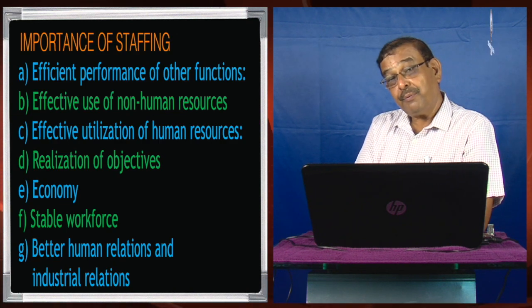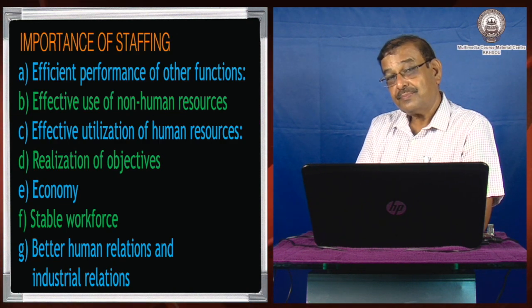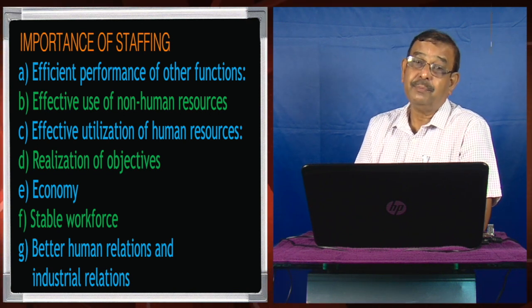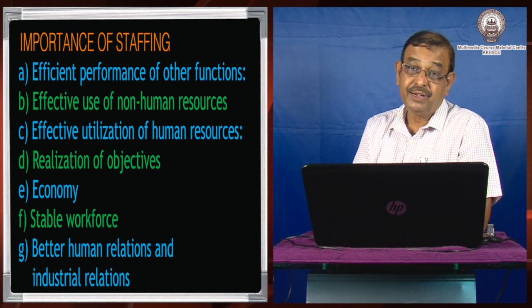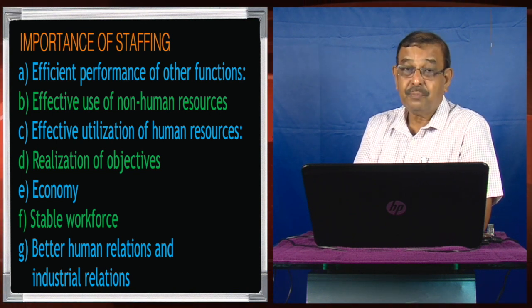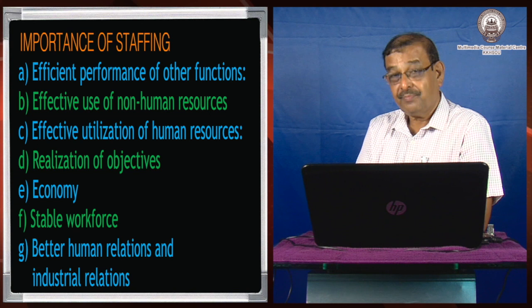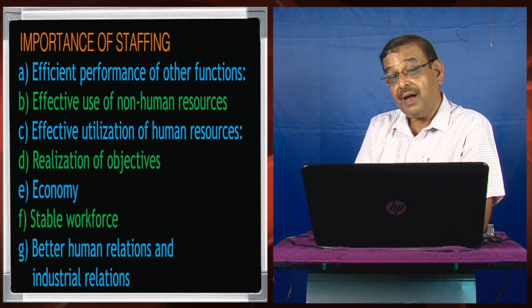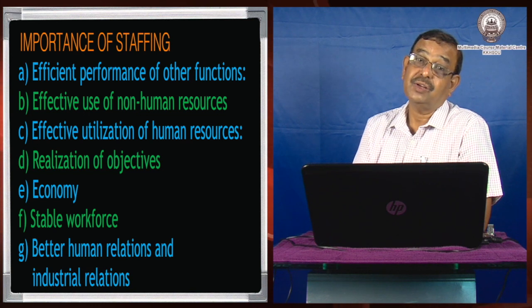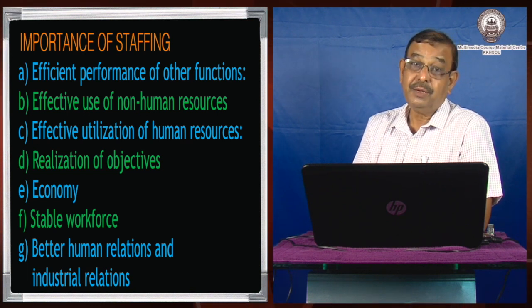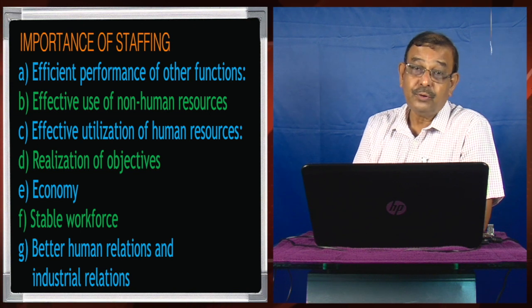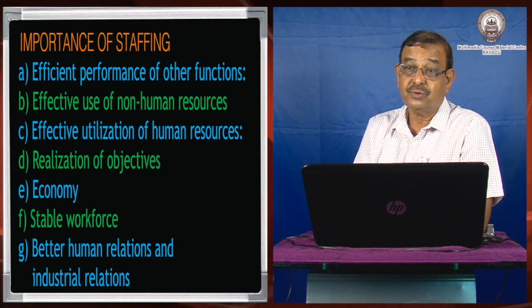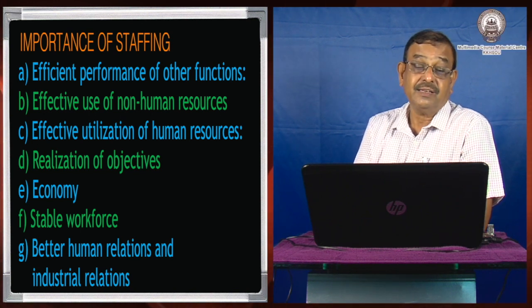Staffing helps in the performance of other functions. For example, the efficiency of marketing will depend on what kind of marketing people you have. The production function will depend on what kind of persons are available. So staffing determines the efficiency of other functions, including controlling. Staffing determines who will plan and who will control — if we have the right persons to plan and control, the planning function will be facilitated.